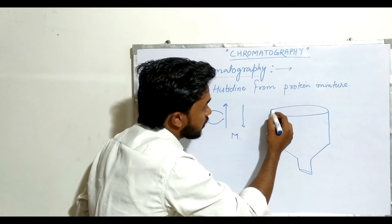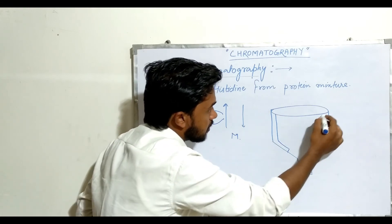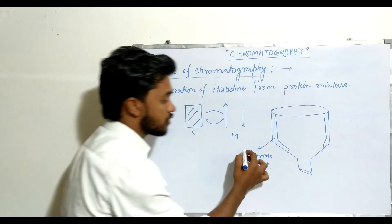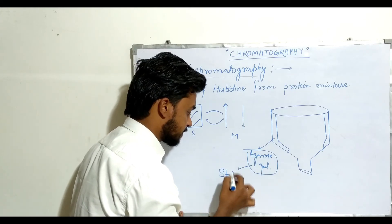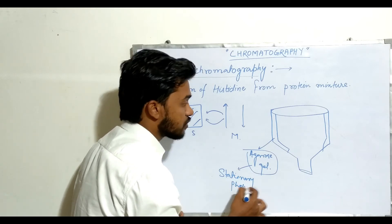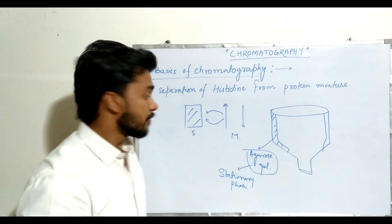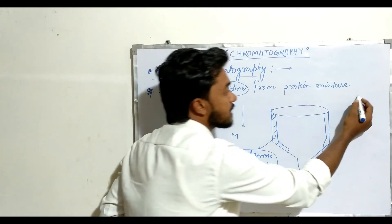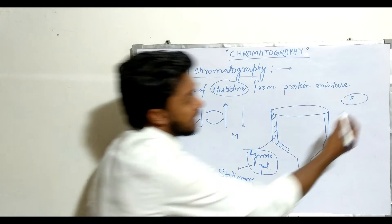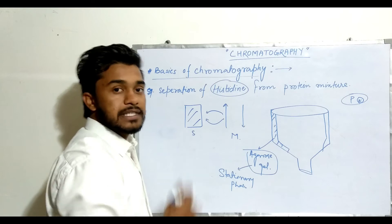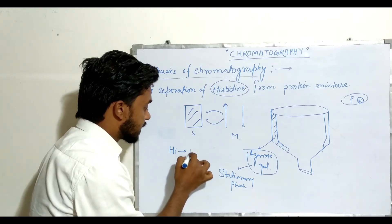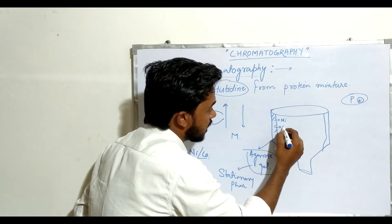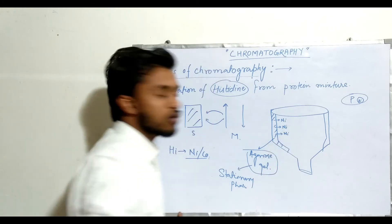This is a funnel. We coated agarose gel on the walls of this funnel — this is the agarose gel, which is the stationary phase. The mobile phase is in liquid form. We have to separate histidine from a protein mixture — consider this is the protein mixture, which contains histidine. As we know, histidine shows affinity towards nickel or cobalt, so we bind nickel or cobalt molecules into the agarose gel.